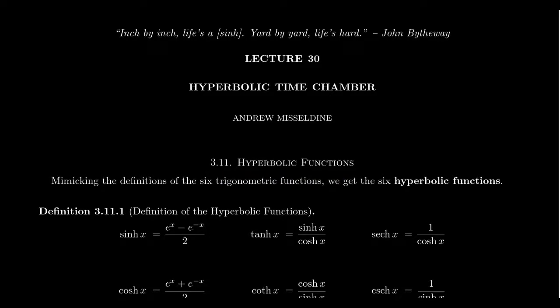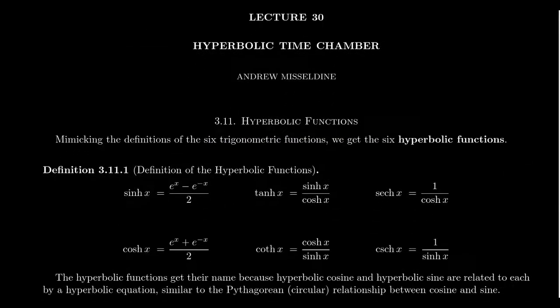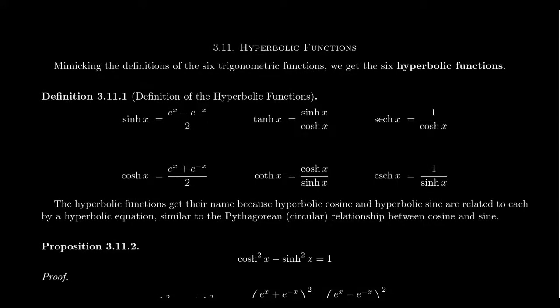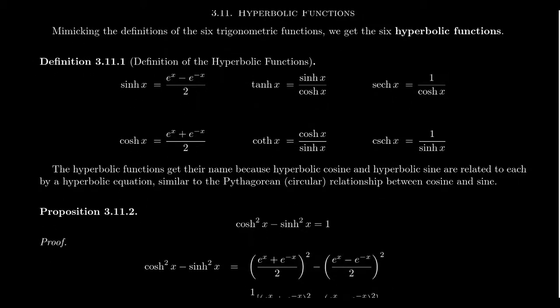The hyperbolic functions are very similar to the six trigonometric functions we've studied previously, and because of that, their names are going to mimic those of the six trigonometric functions. Sometimes to distinguish between these, we call the usual trigonometric functions — sine, cosine, tangent, etc. — the circular trigonometric functions, or just the trigonometric functions for short. These six functions we would call the hyperbolic trigonometric functions, or just hyperbolic functions for short. There are going to be six hyperbolic functions, and their names are defined as follows.